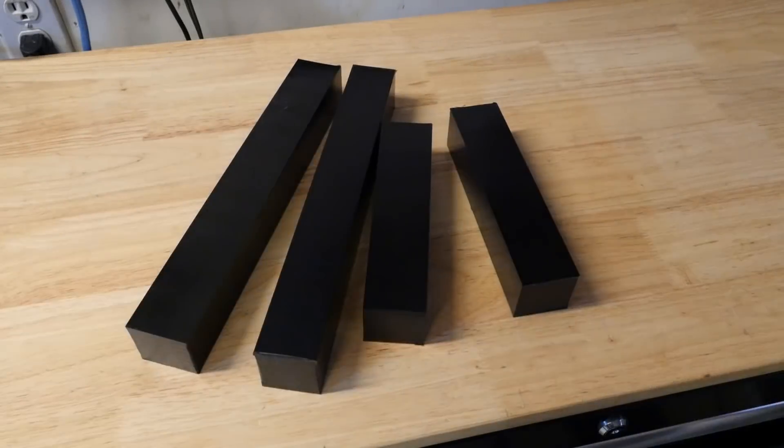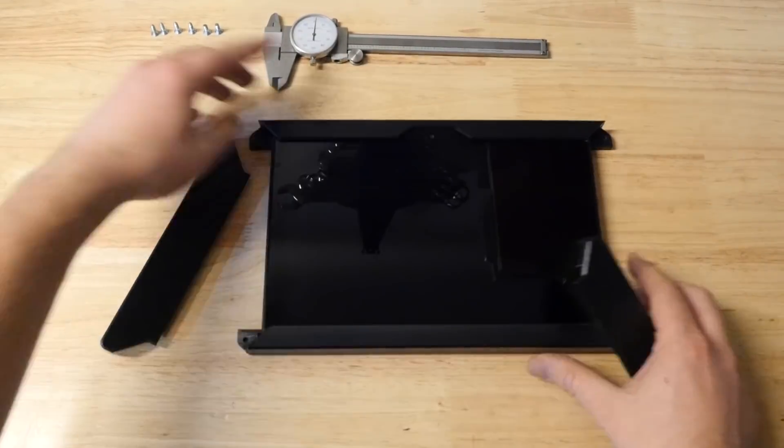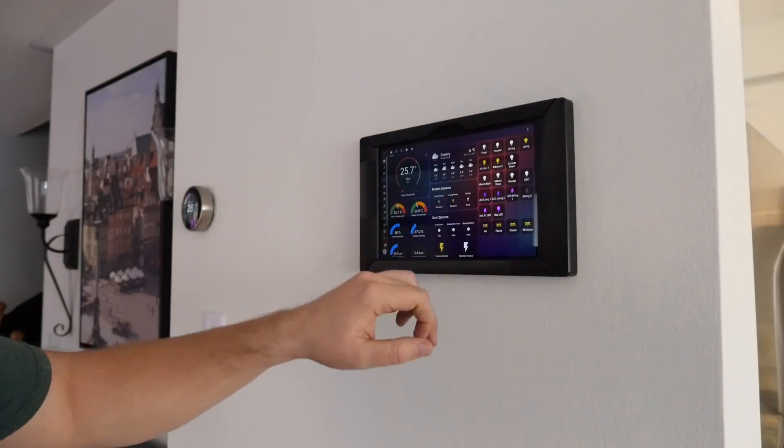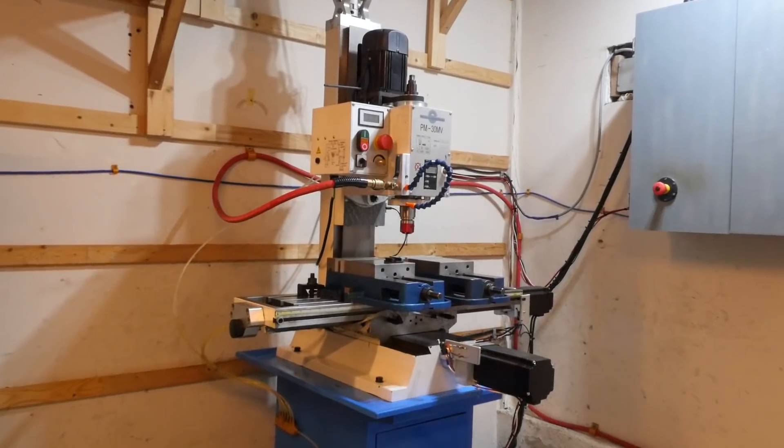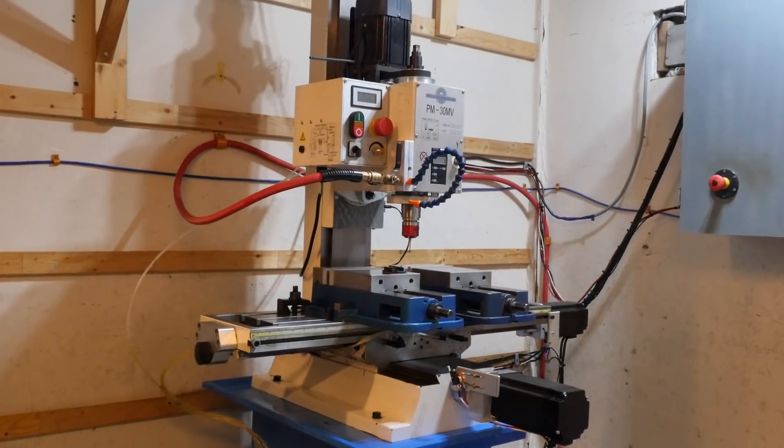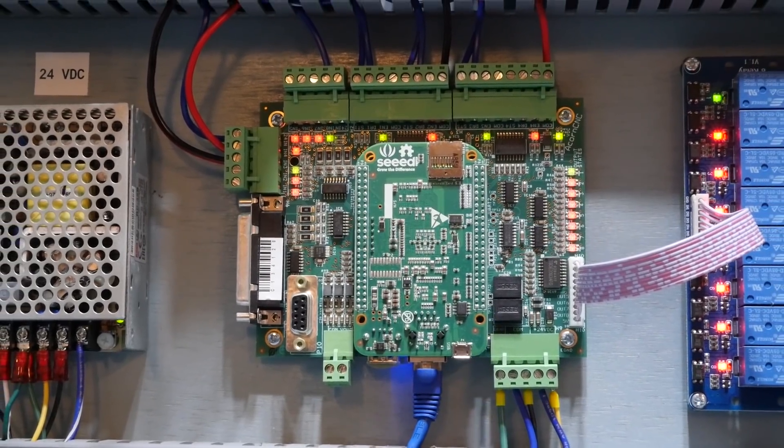This video is about turning these into these so we can build this and mount it here. The parts are made on this little converted Precision Matthews PM30 hobby mill and it's running a Centroid Acorn control.